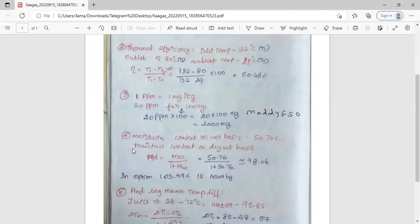The next one: the moisture content on wet basis is given and we need to calculate the moisture content on dry basis. The formula is Md equals Mw divided by 1 minus Mw. If you substitute this, you will get 98.06. In the options it is given as 103.99 percent. You have to select which option is nearby. If two options are given like 100 and 103, we have to select 103 only because it's above 95, so the nearer value is 103. Use common logic while selecting the options for this kind of calculation question.